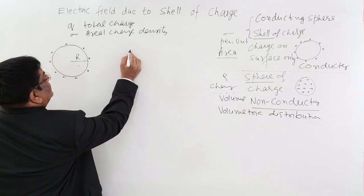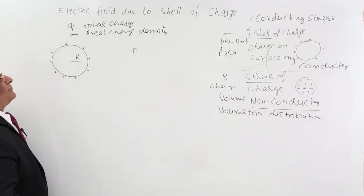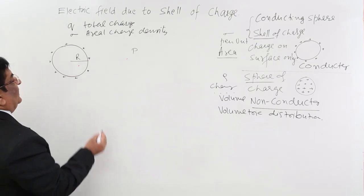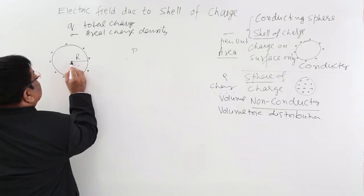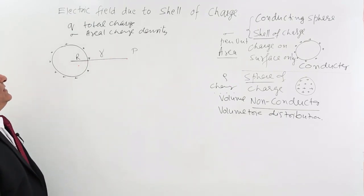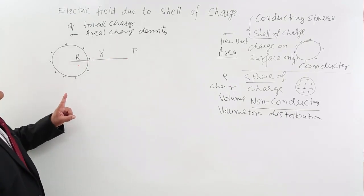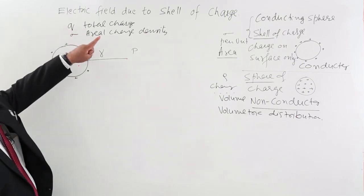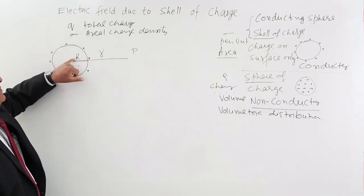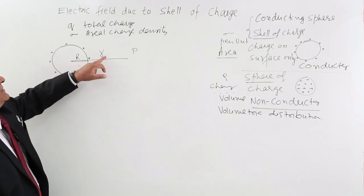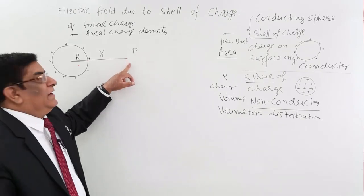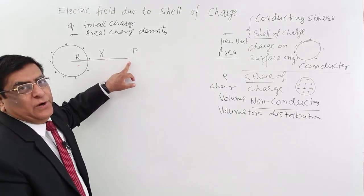I take a point P here at a certain distance. Let me say this distance is small r. So the given quantities are: Q total charge, sigma aerial charge density, capital R the radius, and small r is the actual distance of point P from the center. I have to find out the electric field at this point P.